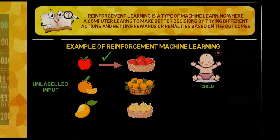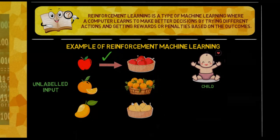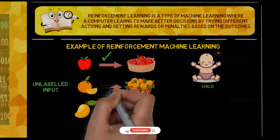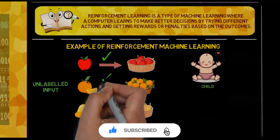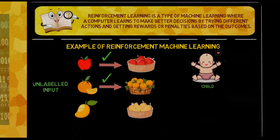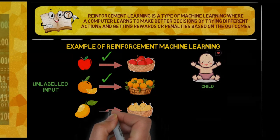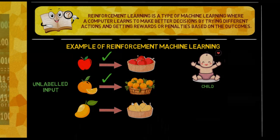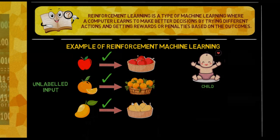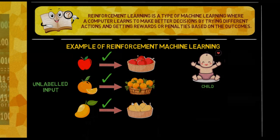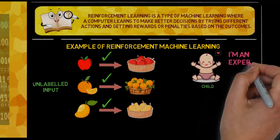They start recognizing patterns like apples are generally round and red or green, mangoes are yellow, and oranges are round and orange. As the child continues to sort more fruits and receive feedback, they improve their sorting strategy. Eventually, the child becomes very good at sorting the fruits correctly based on their features.